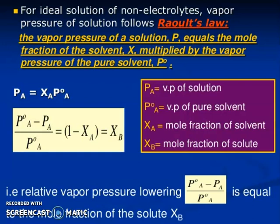And P°A minus PA divided by P°A equals 1 minus XA equals XB. If you consider PA is Vapor Pressure of solution, P°A is the Vapor Pressure of pure solvent, XA is mole fraction of solvent and XB is mole fraction of solute. So you can calculate very easily mole fraction of solute if you know the Vapor Pressure of solution, Vapor Pressure of solvent and mole fraction of solute.